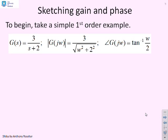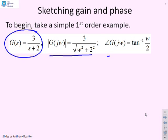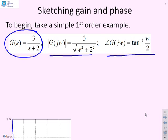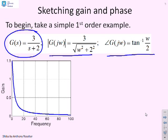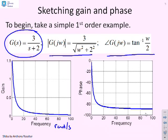For our first example, we take a first-order transfer function: G = 3 / (s + 2). We can calculate the formula for the gain and the formula for the phase, but rather than doing that explicitly, we'll just use MATLAB to get the sketches. Here you can see the sketch of gain against frequency omega in radians per second, and here you can see the plot for the phase.